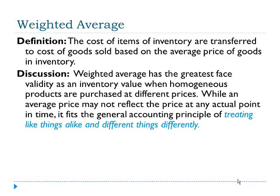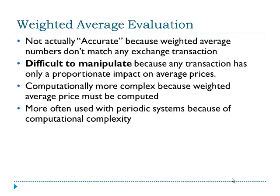Weighted average is the inventory system that most people who know nothing about accounting would think most companies use. The cost of items of inventory are transferred to cost of goods sold based on the average price of goods in inventory. Weighted average has the greatest face validity as an inventory value when homogenous products are purchased at different prices. While an average price may not reflect the price at any actual point in time, it fits the general accounting principle of treating like things alike and different things differently. However, weighted average is not actually accurate because the weighted average numbers don't match any particular exchange transaction.